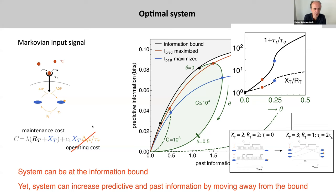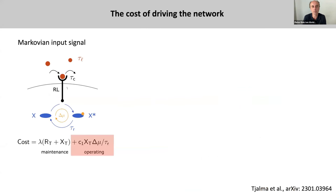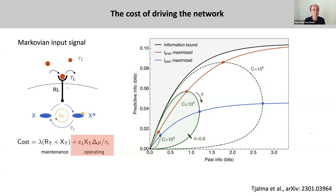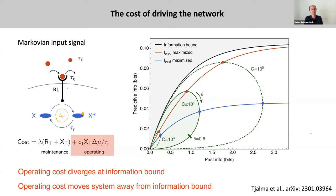But what about energy? In this example I've ignored the operating cost. If I now include the operating cost, the system moves away from this information bound. This can be understood very intuitively: to reach this information bound, the integration time τ should be zero, because only then can the system instantly copy the current input into the current output. But that's precisely the point where this operating cost diverges. So the operating cost diverges at the information bound, and including it moves the system away from the information bound.